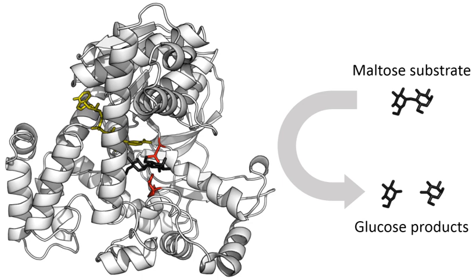Allosteric sites are pockets on the enzyme, distinct from the active site, that bind to molecules in the cellular environment. These molecules then cause a change in the conformation or dynamics of the enzyme that is transduced to the active site and thus affects the reaction rate of the enzyme. In this way, allosteric interactions can either inhibit or activate enzymes. Allosteric interactions with metabolites upstream or downstream in an enzyme's metabolic pathway cause feedback regulation, altering the activity of the enzyme according to the flux through the rest of the pathway.